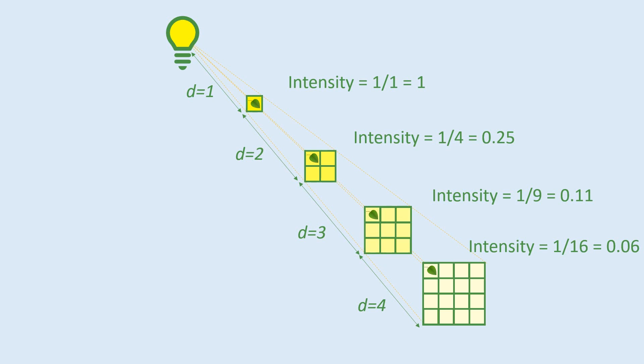We call this the inverse square law. You might be able to notice where the name comes from. Let's take our first example when the distance was one. To work out the intensity, it was one divided by the distance squared, one over one squared, which gave us one.